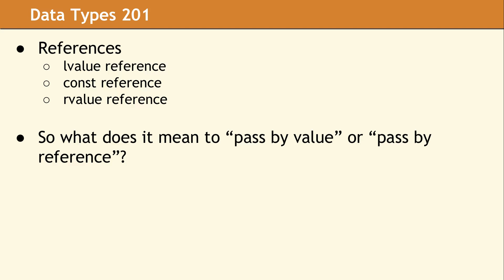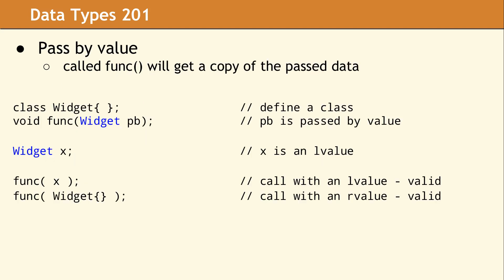So what does it mean to pass by value or pass by reference? The simplest form of parameter passing in C++ is pass by value. The called function gets a copy of the passed data. And so in this example, we have a function named func. It takes a value of type widget. This parameter is passed by value because there's no decoration on the data type. It's simply a widget. When we declare x to be of data type widget, it has a name. It's a variable named x. Therefore, it is an L value. We can call a function with x. We're calling this function with an L value. That's perfectly valid. And we can call this function with a temporary of type widget. This is the syntax for constructing a temporary widget on this line. That's a call with an R value. And this is also completely valid.